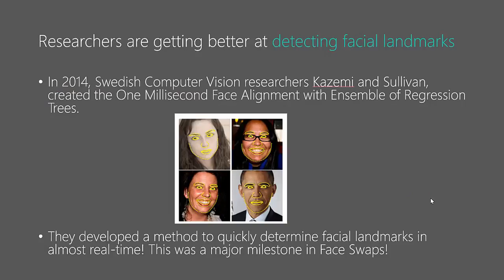What actually makes face swaps or face filters hard is getting the images to align correctly. Suppose we wanted to merge two faces — we would need to align key facial landmarks like eyes, nose, mouth, cheekbones, and eyebrows onto the other face. We'd also have to apply some warp perspective to get the face to morph onto the other face properly.